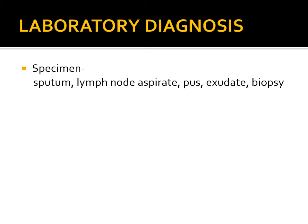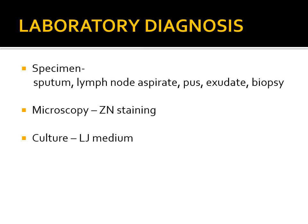The procedure is similar to that for tuberculosis. Microscopy with Ziehl-Neelsen staining is important. Culture is done on Löwenstein-Jensen media. To assess pigment production, two sets of LJ media are set up — one kept in dark and one in light. We observe whether pigment is produced only in light or in both, allowing us to determine the type of non-tuberculous mycobacteria.